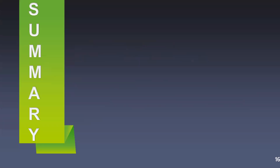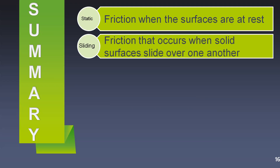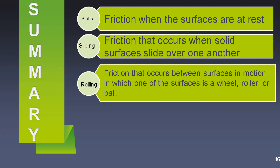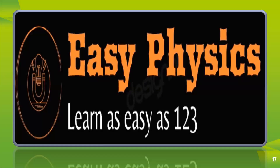I hope today's topics are very clear to all of you. Let's have a quick recap: Static friction is friction when the surfaces are at rest. Sliding friction occurs when solid surfaces slide over one another. Rolling friction occurs between surfaces in motion in which one of the surfaces is a wheel, roller, or a ball. Fluid friction is the force that tries to slow objects down when they move through a liquid or a gas. If in doubt, please post your question in the comment section so I can address it in the next video. Thank you for watching — have a nice day!